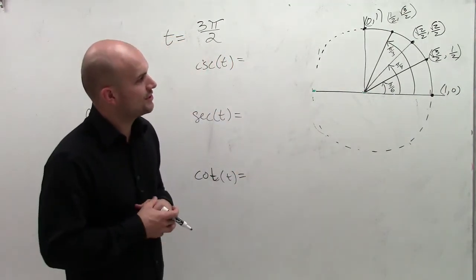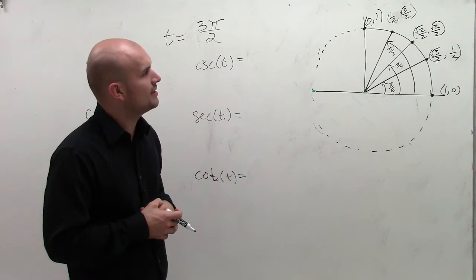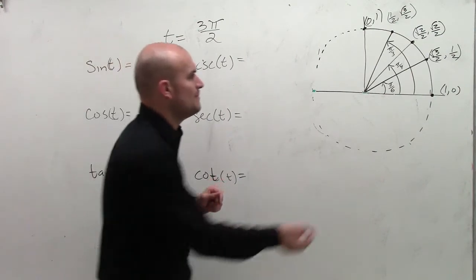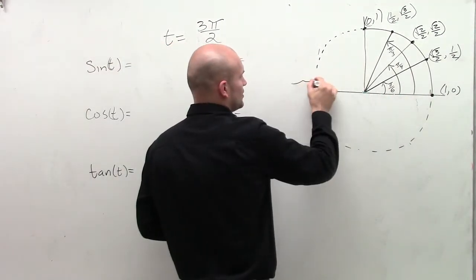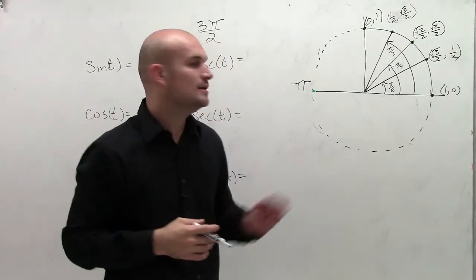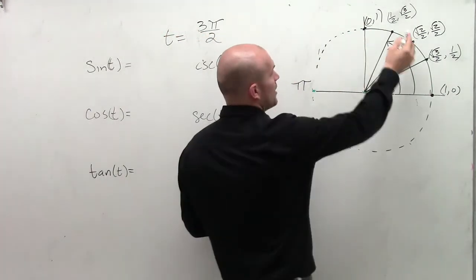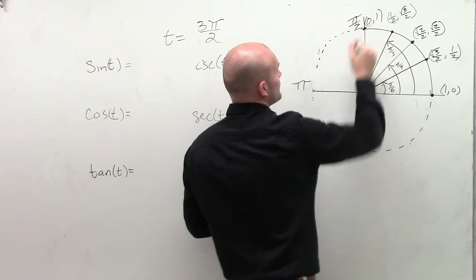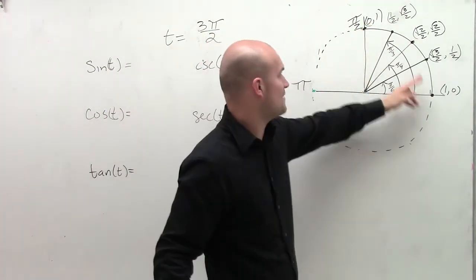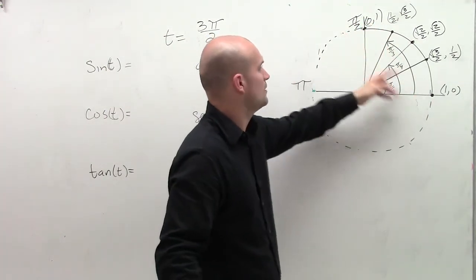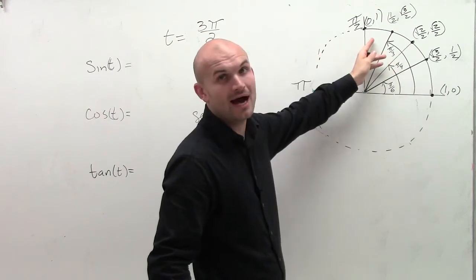The first thing when trying to find 3π/2 is to remember that halfway around a circle is π. If I go halfway between 0 and π, I would label that as π/2.